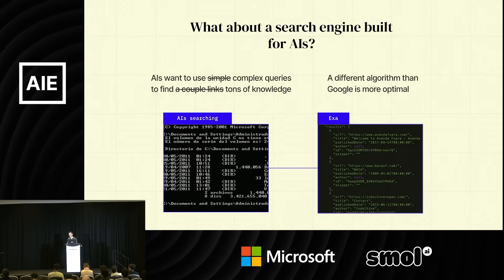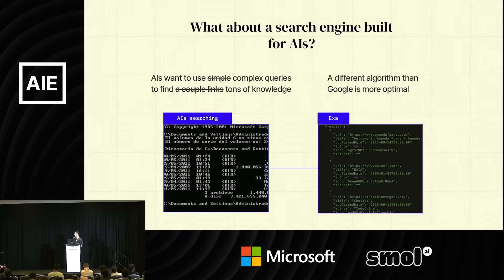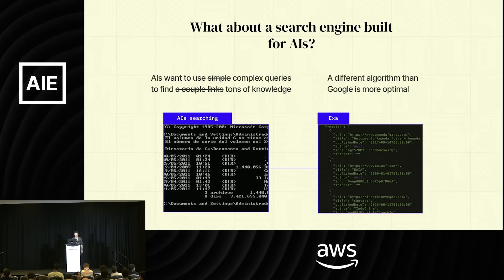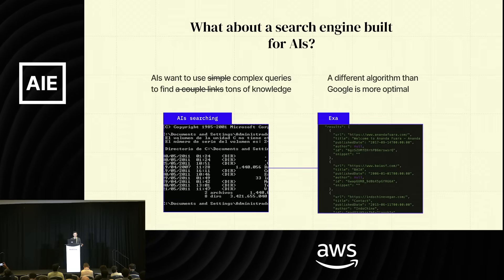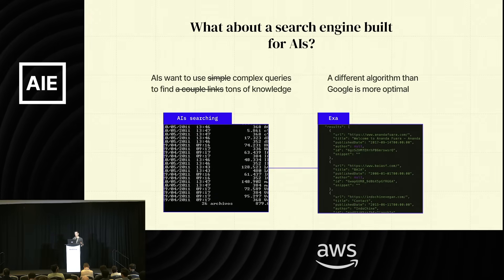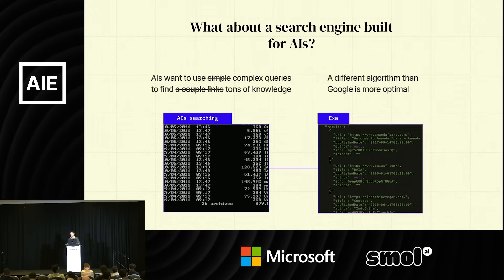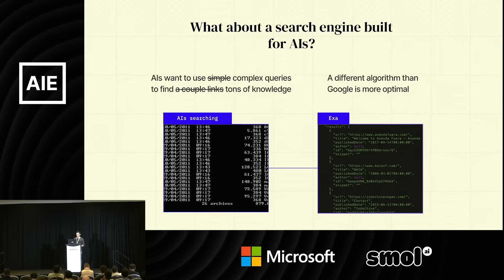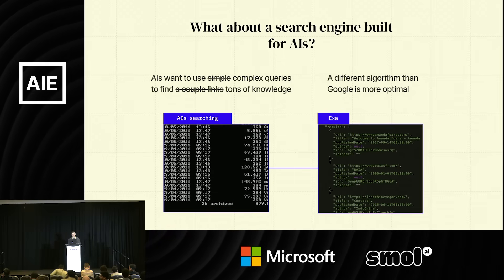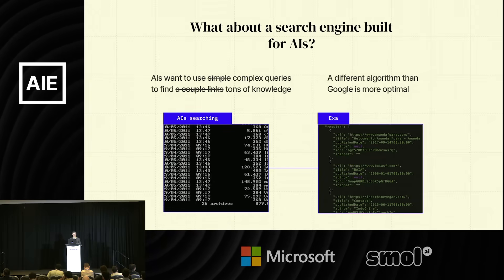But AIs are very different. An AI can gobble up information like crazy. AIs want to use complex queries, not simple ones, to find not just a couple of links but tons of knowledge — as much as they could get — because they have the patience to analyze it all extremely fast. So the search algorithm that's optimal for this type of creature is not the same algorithm that's optimal for the human.